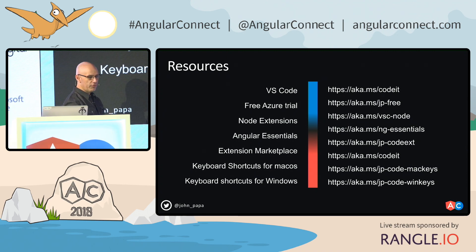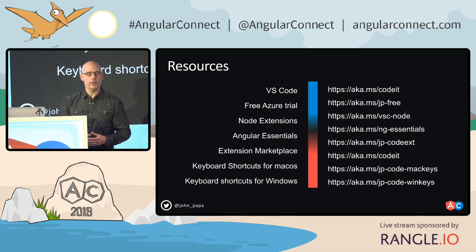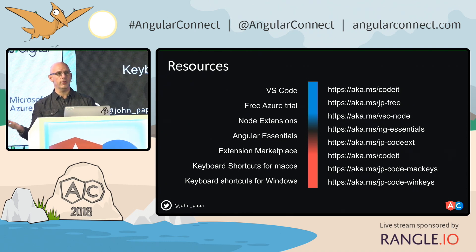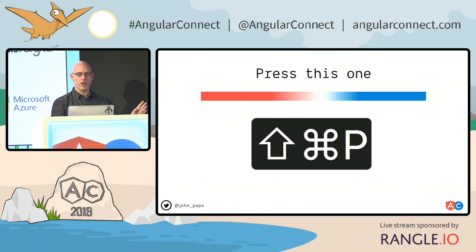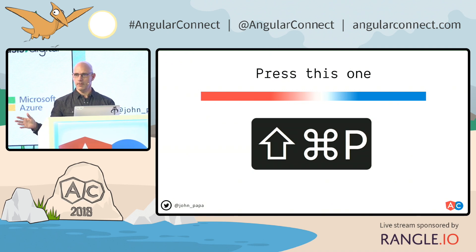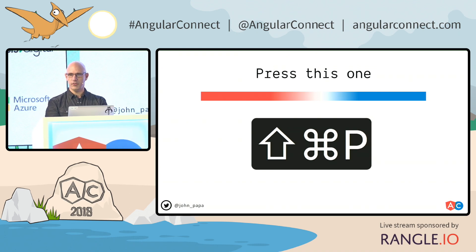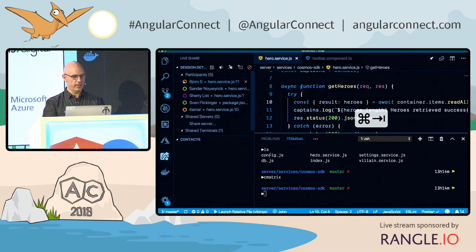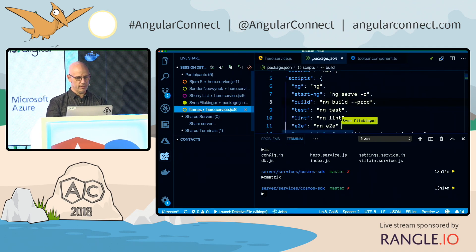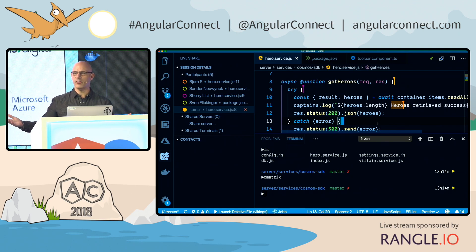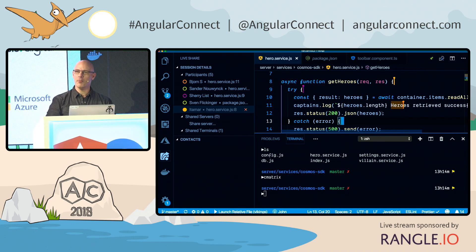Here are the resource links again — definitely grab those, check them out, see what you can do. If you have questions, I'll be around the rest of the conference to talk about VS Code. And remember: one thing from this conference — press Command Shift P or Control Shift P on Windows. That's the easiest way to get to anything inside VS Code. We've got five people looking at our code right now — Bjorn, Sander, Sherry, Sven, and Itamar. A great feature — just make sure you put it as read only. Thank you very much. Command Shift P, everybody.